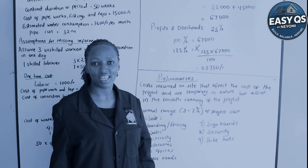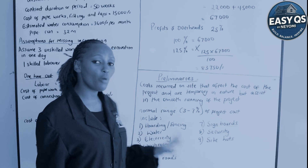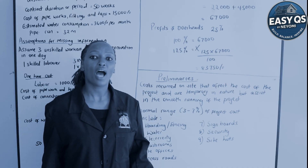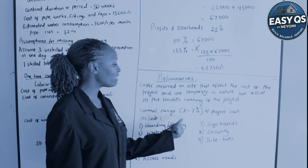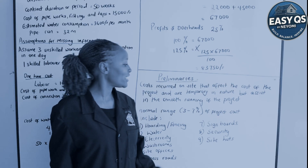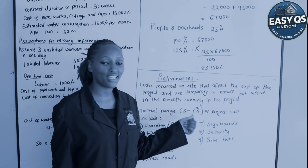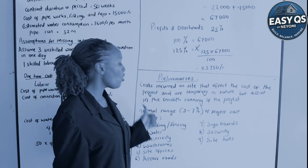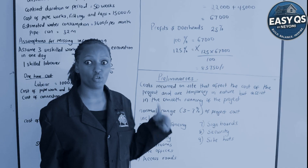These are costs incurred on site that assist in the smooth running of the project. How do you construct a site without water? How do you do a site without electricity? In modern construction, electricity is used extensively. The normal range for preliminaries — if you want a rough estimate — is between three to seven percent of the project costs. If your project costs 10 million, take three to seven percent of that to get the range.